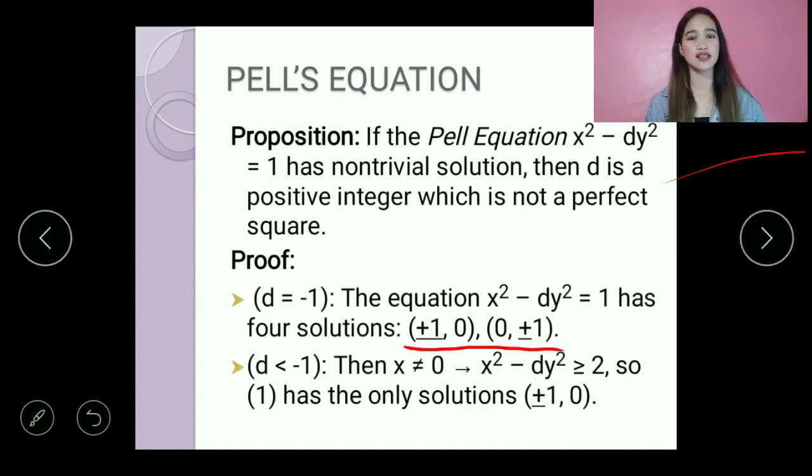So if d is less than negative 1, then x is not equal to 0. And the equation x squared minus dy squared is now greater than or equal to 2. So 1 has the only solution: positive or negative 1, 0.